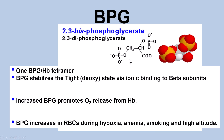2,3-bisphosphoglycerate (BPG) is an organic molecule found inside red blood cells. Red blood cells do glycolysis, and BPG is shunted off the glycolytic pathway. It carries negative charges that bind to positive charges on the beta chains of hemoglobin, giving one BPG bound per hemoglobin tetramer. BPG stabilizes the tight deoxy state via ionic binding to the beta subunits.